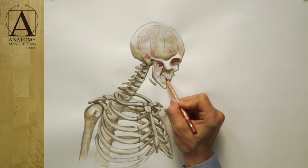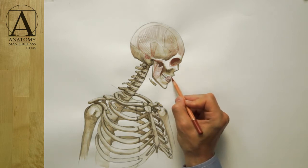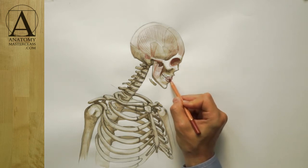There is another important muscle of the human head that has a circular shape. This is the muscle of the mouth. This muscle closes the lips, pulling them together.